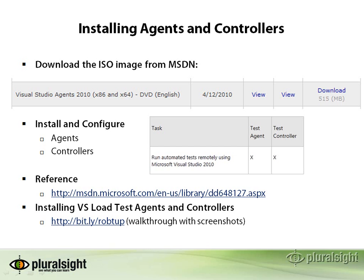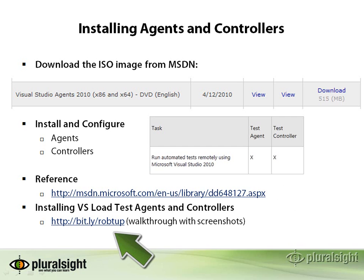Once you have that, you want to install and configure at least one controller and multiple agents. Once they're installed, you'll run the configuration, and that will let you set up some of the properties and such. There's a great reference on this MSDN article link, and I've also recorded a walkthrough of installation of the Visual Studio Load Test Agents and Controllers on my blog, which you can find at bit.ly/robtup.